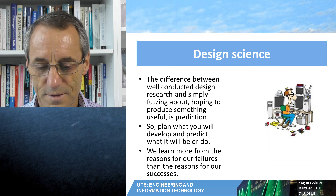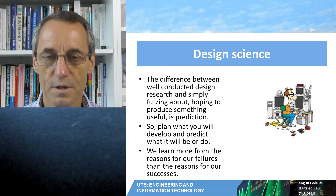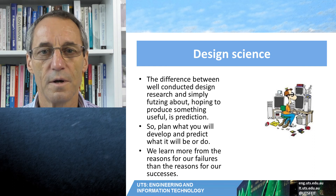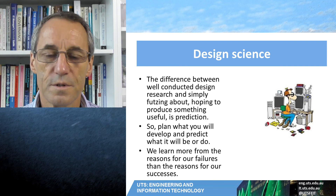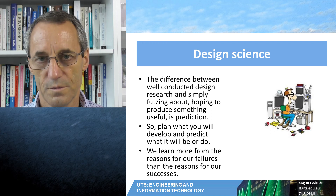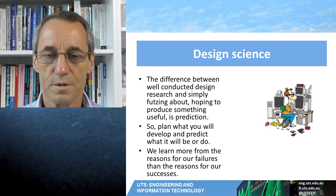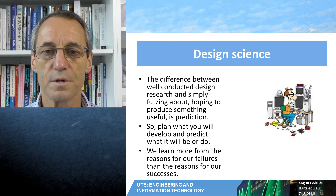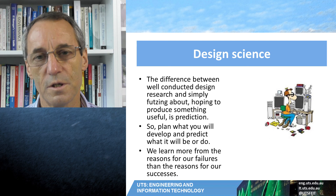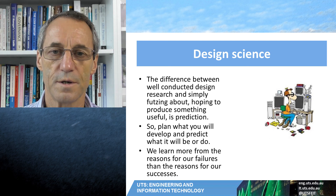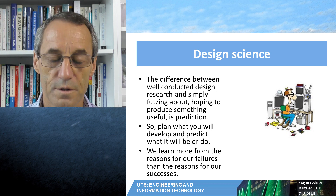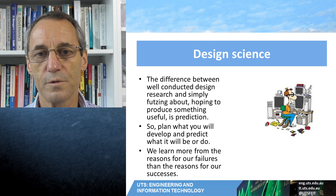With design science, there is a difference between well-conducted design research and simply futzing about. If you just mess about and produce something and then call it the result, that's hacking — that's not design. With design science, the essential element is that you predict what you're going to do and what the result is going to be: 'I'm going to develop this, it will have these characteristics, it will do these things.' That prediction and the discipline of predicting and trying to achieve it distinguishes design science and deliberate research from hacking. If you're going to do something in this assignment, you must have a reasonable prediction before you start doing your design.